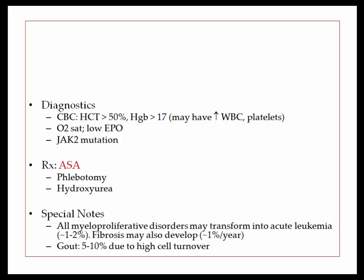Diagnostically, the patient will have a high hematocrit and a normal O2 saturation. The normal O2 saturation is not part of the diagnostic criteria, but you need it to confirm this is not physiologic erythrocytosis. Testing for the JAK2 mutation confirms the diagnosis. Treatment includes aspirin to prevent clots, phlebotomy, and/or hydroxyurea to lower the count. All myeloproliferative disorders may transform into acute leukemia at a rate of 1–2% per year; fibrosis may develop at 1% per year. A patient with P.vera may also be described with signs and symptoms of gout due to rapid cell turnover.